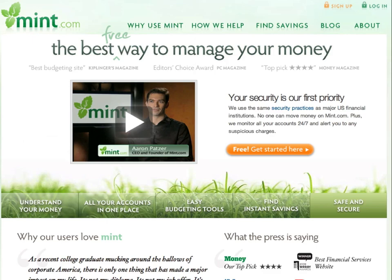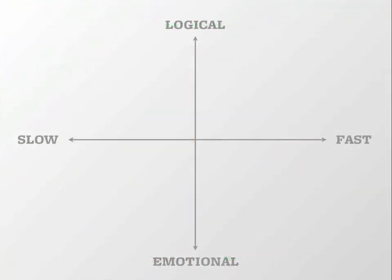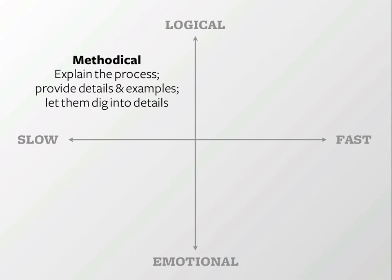There are a lot of things you can do to appeal to each of these different modes. For the methodical decision mode, explain the process, provide details and examples, and give them enough detail that they can dig into it if they want to.